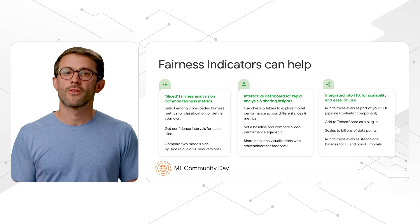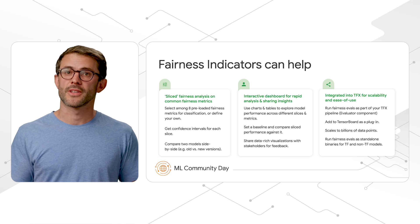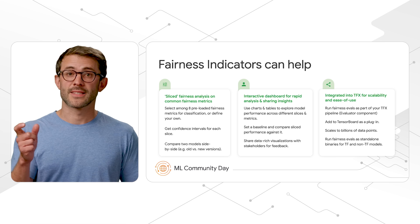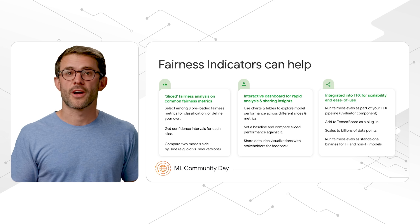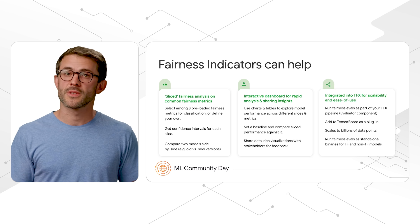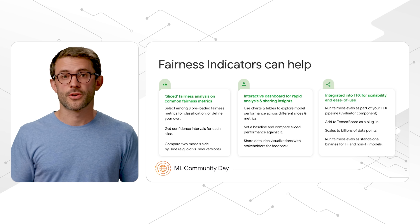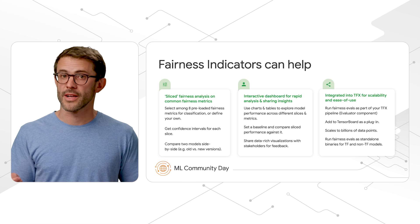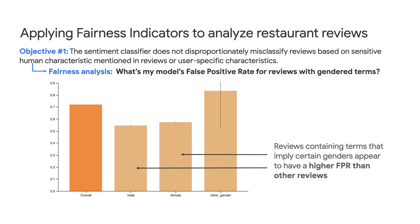With that background, let's return to our restaurant review classifier example. We can use Fairness Indicators to evaluate our first objective, which is accuracy. We use the presence of gender identity terms as the category in question for our sliced analysis. We wouldn't want the presence of these terms to unduly influence the outcome of the classifier. Fairness Indicators shows us that reviews containing terms implying certain genders actually have a lower accuracy than other reviews, which is concerning. Now, we turn to our second objective, which is to minimize any differences in error rates, and specifically, false positive rates. This graph shows us that reviews containing terms that imply certain genders tend to have a higher FPR than other reviews, especially for the male gender. This means that they are far more likely to be classified incorrectly as positive, which could lead to biased, misleading conclusions for your assessment efforts.